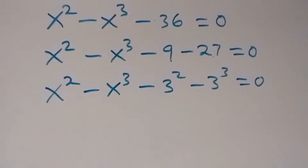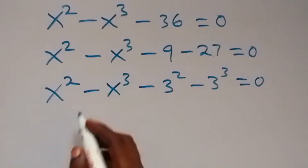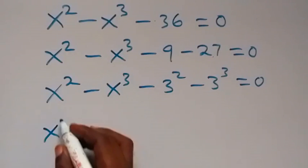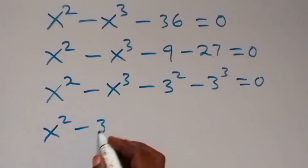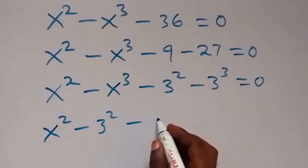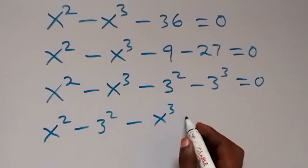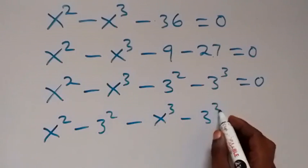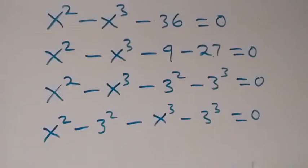Then in the next step, let's bring the powers of 2 together. We have x squared minus 3 squared, then minus x cubed minus 3 cubed, equals 0.